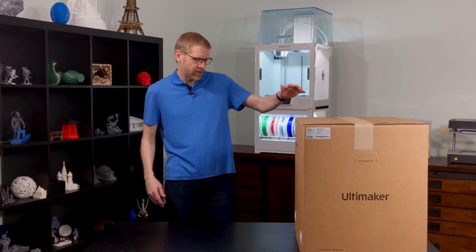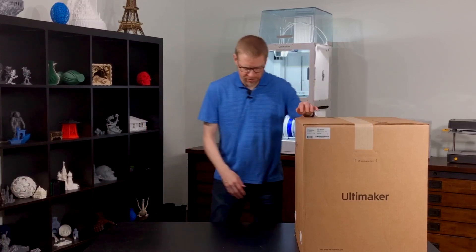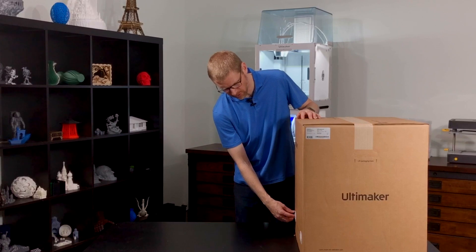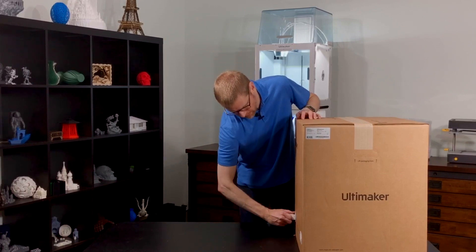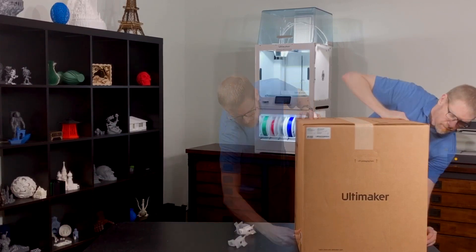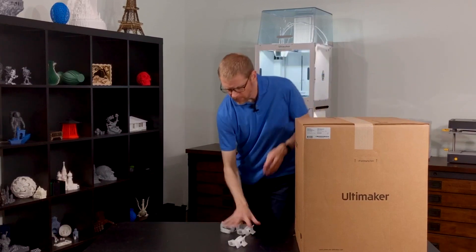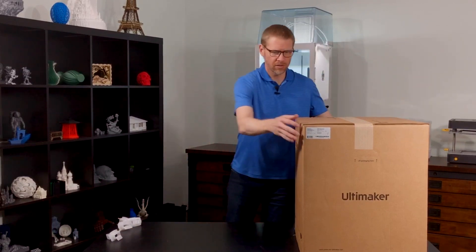Let's go ahead and get started here. The Ultimaker S3 comes in some nice new packaging with these four plastic locking clips that just pop out, and then the lid just lifts off.